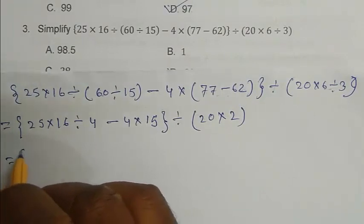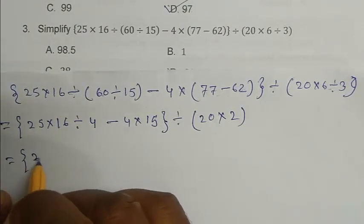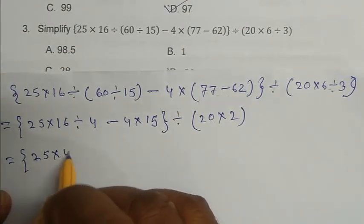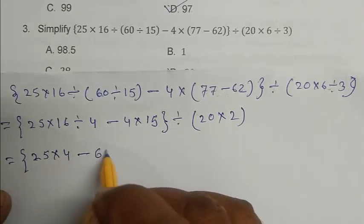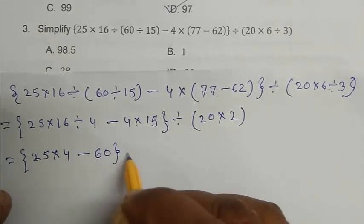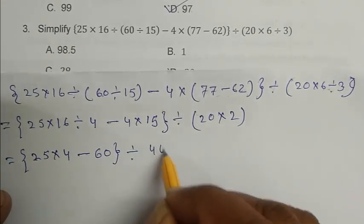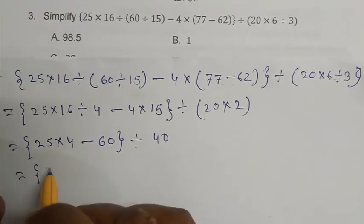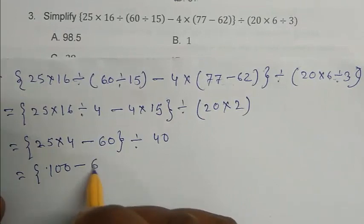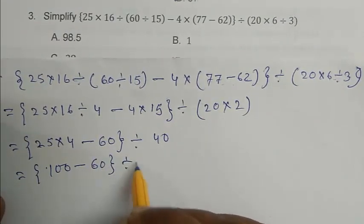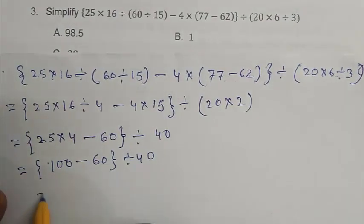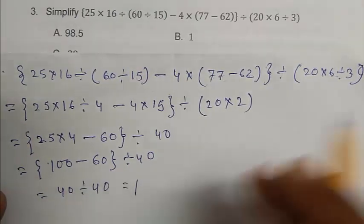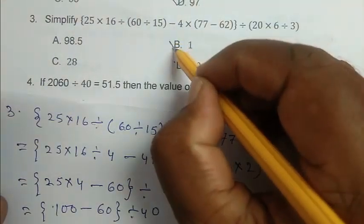So it is become 25 into 4 minus 16 divided by 40. It is become 40 divided by 40 that is 1. So B is the right answer.